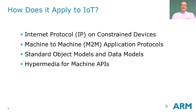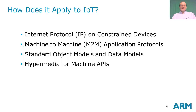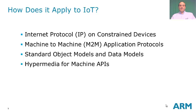So how does this apply to IoT? How do we get these qualities in IoT? We're working on internet protocol for constrained devices so that a device with a tiny amount of memory and network bandwidth can still use internet protocols — the same TCP and UDP protocols we use on the web. There are machine-to-machine application protocols, standard object models and data models for IoT, and a hypermedia system for machine APIs, which we'll go into in more detail.